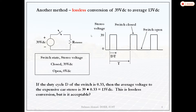Efficient conversion can be achieved using a switch. If the switch is turned on and off at a fast rate, we see the average value at the output. If the input voltage is 39 volts and we require 13 volts, for one-third of the time period the switch is turned on and two-thirds it is turned off, so the average voltage is 39 × 1/3 = 13 volts.